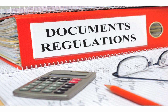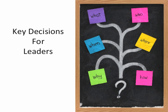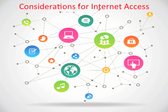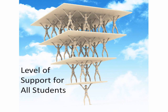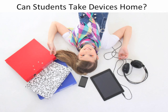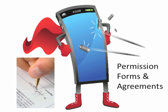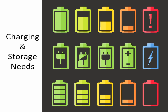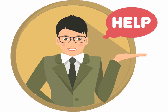In addition to equipping the school building with secure and reliable connectivity, the leadership team will need to develop key policies and procedures to support continual implementation. Key decisions include, but are not limited to: when and how to support student-owned devices including cell phones; the provision of wireless internet access off school premises; the level of support provided to students who are economically disadvantaged; whether or not students will be allowed to take home devices owned by the district; parental and student agreement forms on caring for devices at home; maintenance and service plans; charging and storage needs; and ways for teachers and students to access technical support as needed.